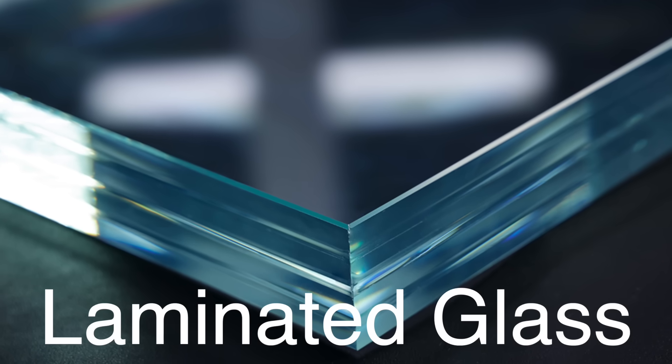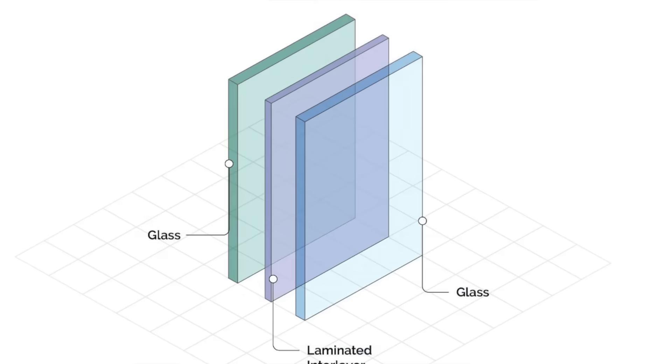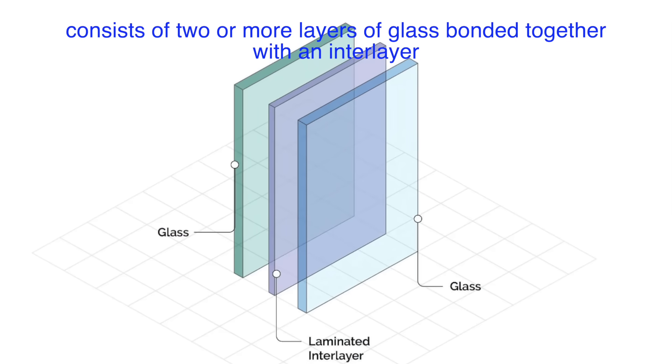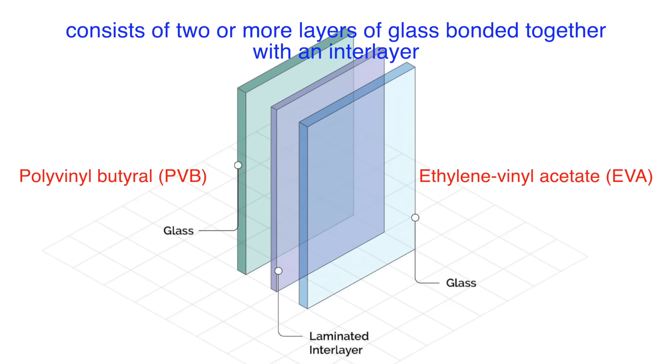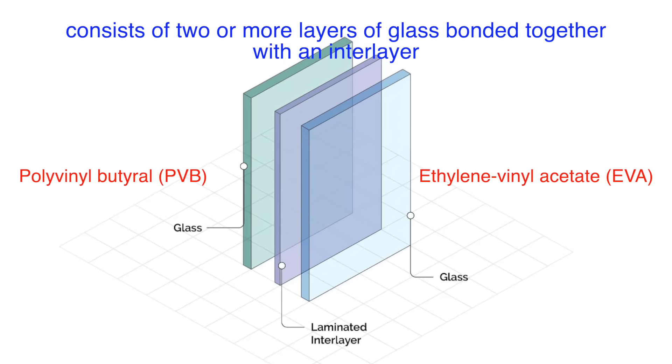Another type is laminated glass, which is frequently used in safety applications. Laminated glass consists of two or more layers of glass bonded together with an inner layer, usually made of polyvinyl butyral (PVB) or ethylene vinyl acetate (EVA).